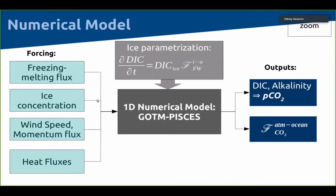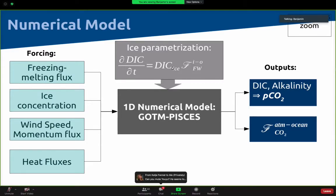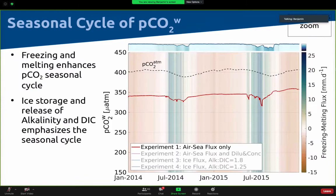Very briefly, the way I parameterize the ice impact onto my 1D model is using a very simple equation. I'm changing the DIC and alkalinity at the surface of my water column by introducing a term which is the freezing/melting flux — also called the ice formation rate — how much fresh water is removed or added to the water column when the ice is freezing or melting. I multiply that by a concentration of DIC or alkalinity in the ice, which is a constant parameter I can choose and play with.